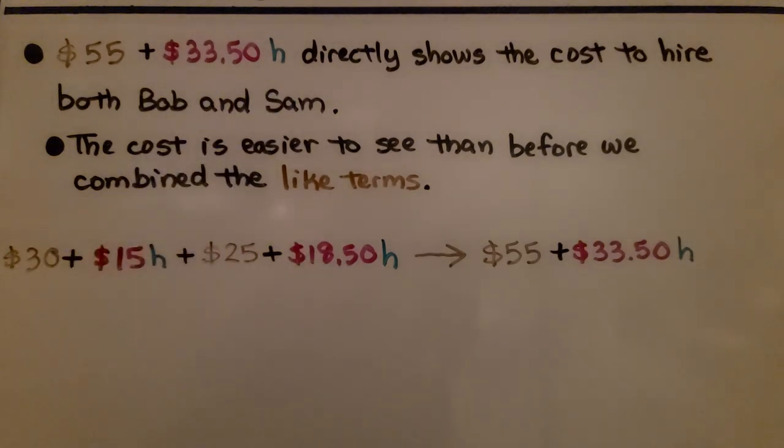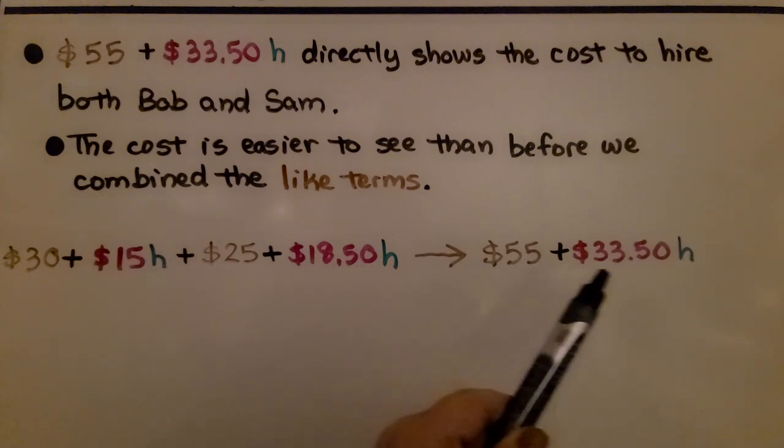The company will pay $55 plus $33.50 per hour to hire both Bob and Sam. And the cost is easier to see than before we combined the like terms. Before, it looked like this. Now, it looks like this. It's a lot easier to see the cost of hiring both of them.